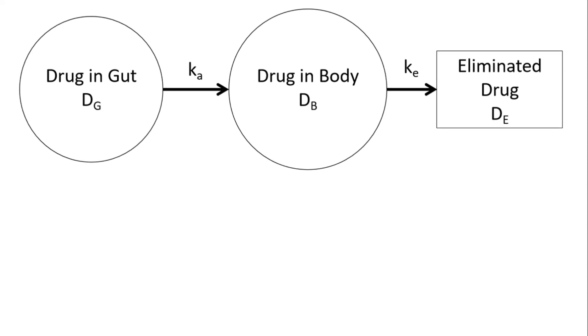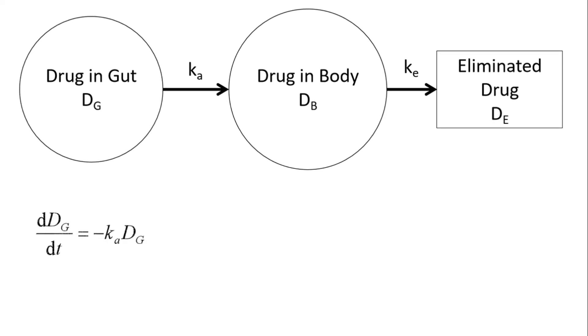We can now write a system of differential equations to describe how all of these work. First, we look at how the drug in the gut DG changes with time, and that's just negative KA times DG, because you have a rate constant that describes how it moves from the gut to the body, and it's negative because you're removing from DG and you're putting it into DB.